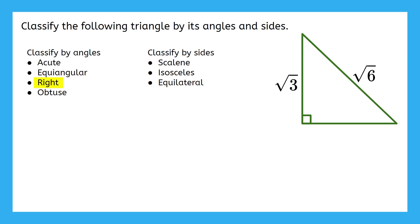Using the Pythagorean theorem, we get that the missing side is equal to the square root of 3. This means that two of the side lengths are the same, and we have an isosceles triangle. Putting both of these classifications together allows us to answer the question. We have a right isosceles triangle.